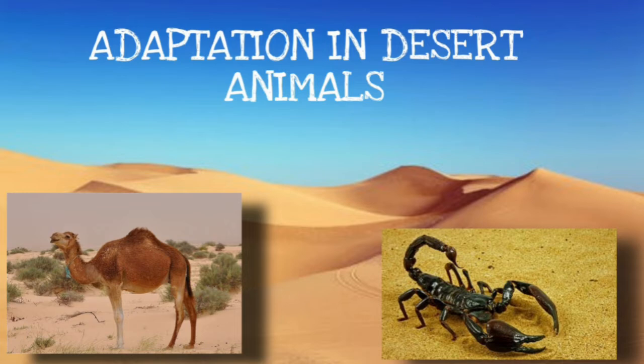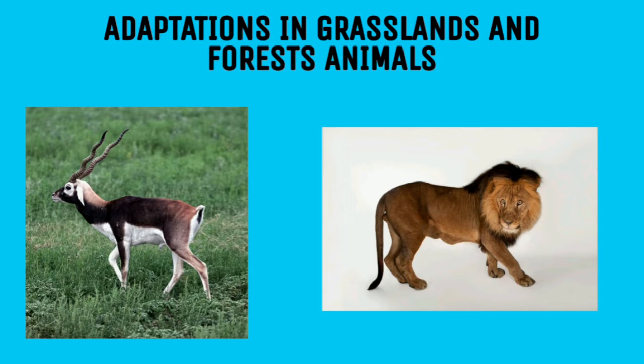Adaptation in forest and grassland animals. In the picture you can see a lion and a black buck. Carnivorous animals like the wild dog, fox, tiger, and lion have very strong legs to run fast and capture their prey. They have claws and their teeth are very sharp and pointed.